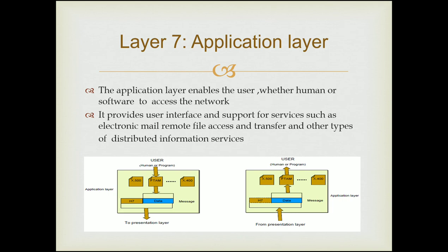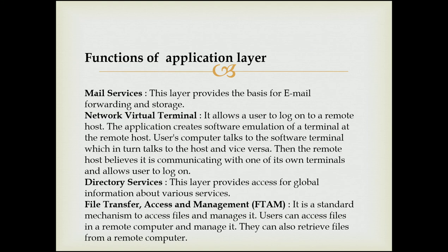The last layer is the Application layer. The Application layer enables the user — whether human or software — to access the network. It provides a user interface and support for services such as electronic mail, remote file access, transfer, and other types of distribution information services. The functions of the Application layer are: mail services, network virtual terminal, directory services, and file transfer, access and management. Mail services: provides the basis for email forwarding and storage. Network virtual terminal: allows the user to log on to a remote host by creating software emulation of a terminal at the remote host. Directory services: provides access to global information about various services. File transfer, access and management: a standard mechanism to access and manage files, including receiving files from a remote computer.